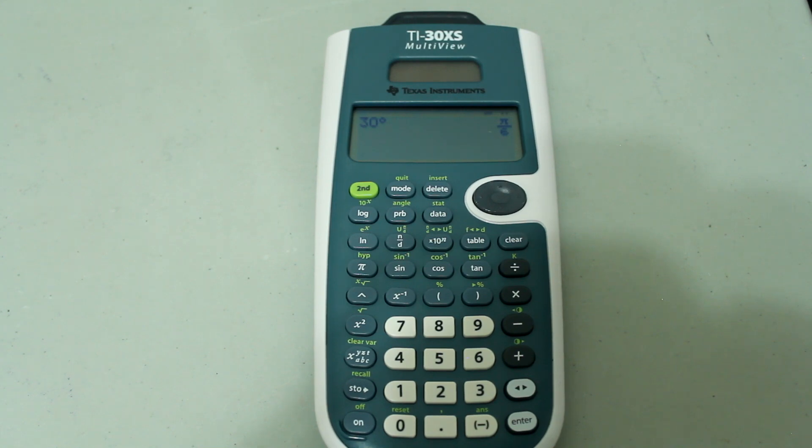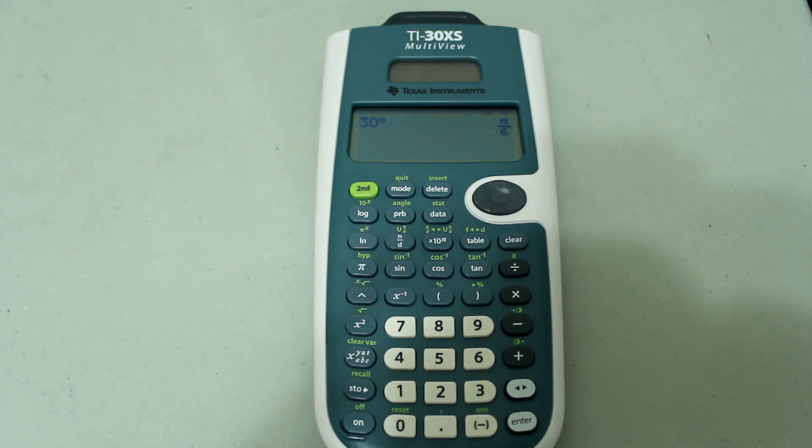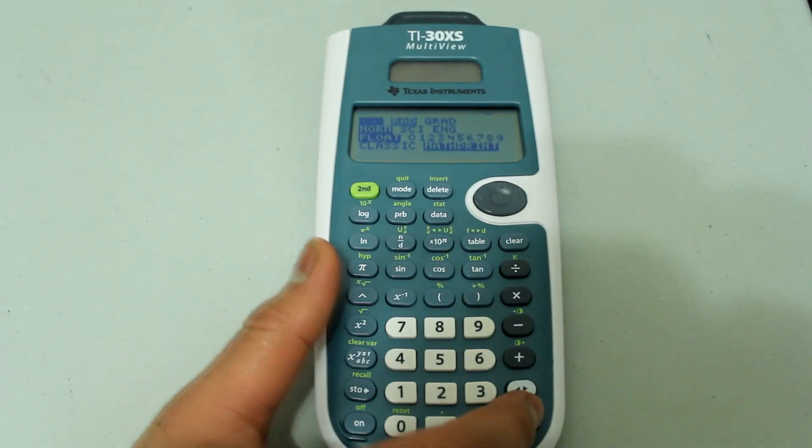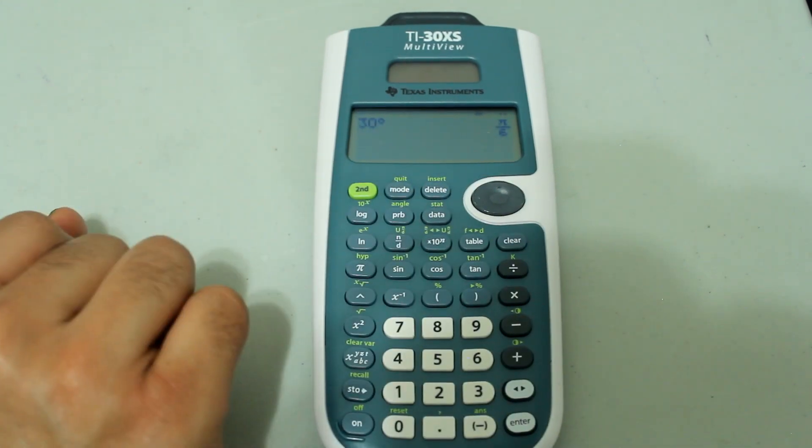Likewise, if you wanted to go from radians to degrees, since the end answer would be in degrees, you need to be in degree mode. So let's go back to mode and select degree again. And let's second mode to quit.